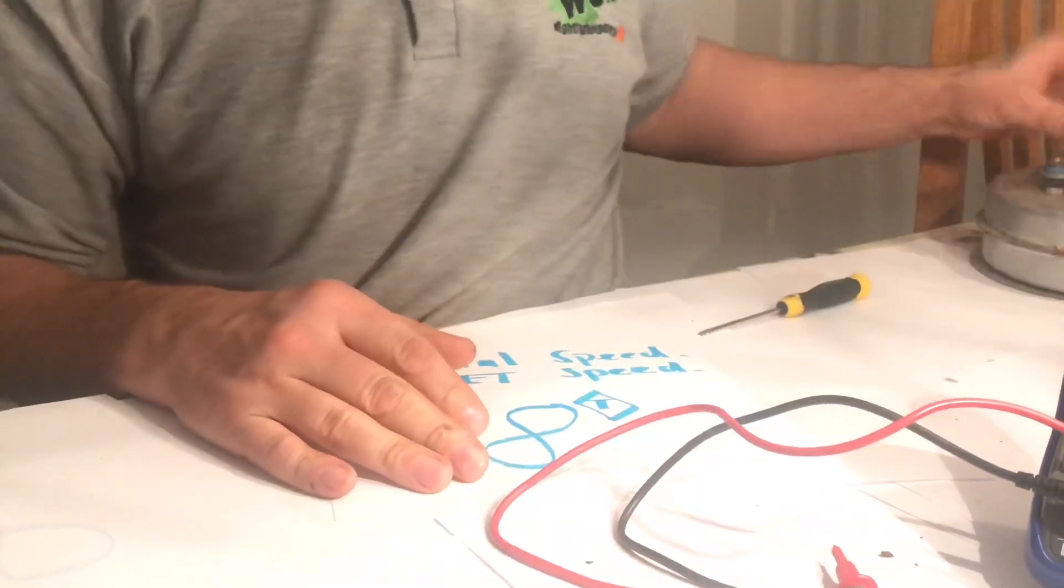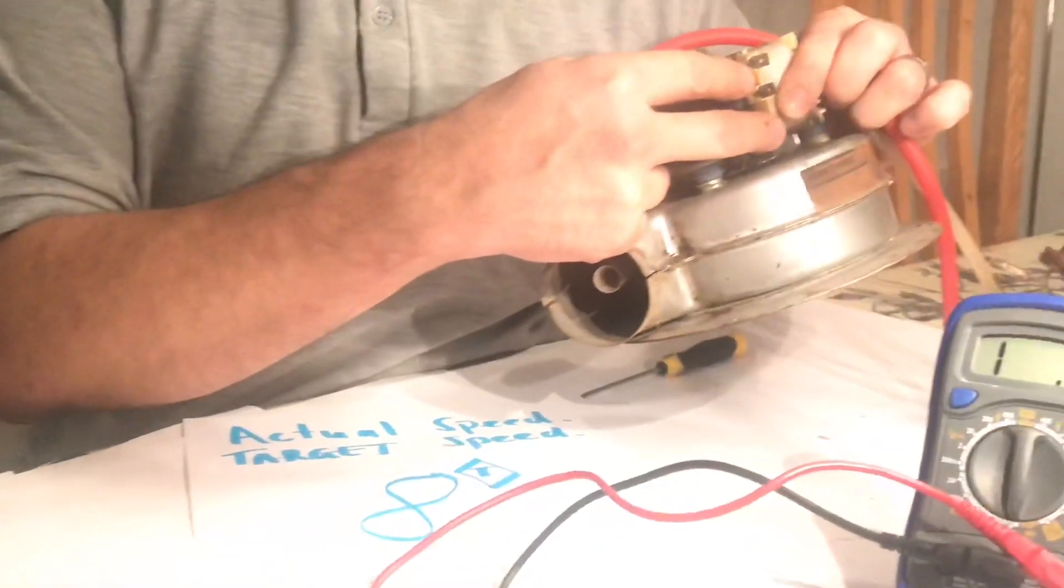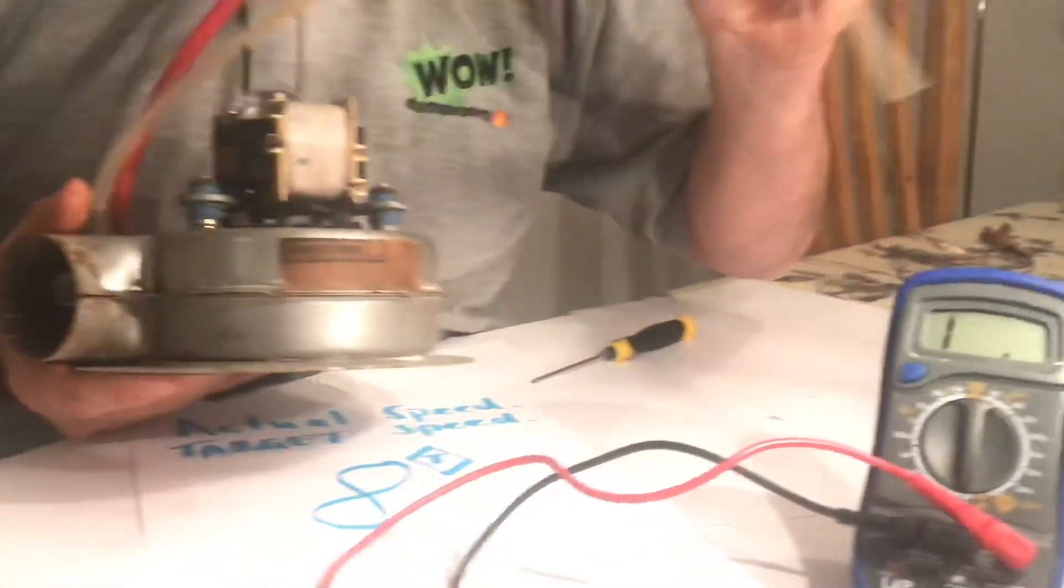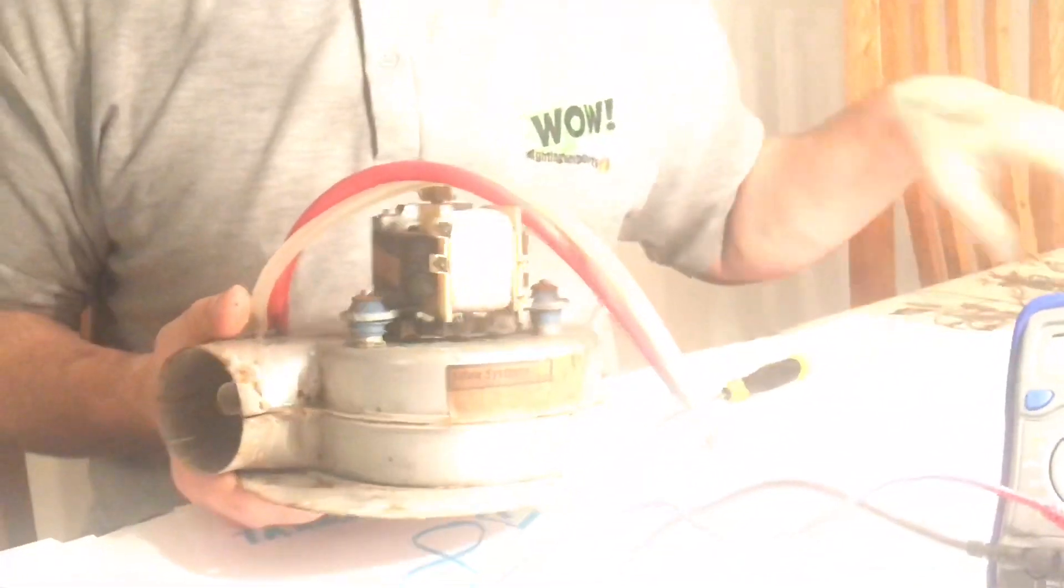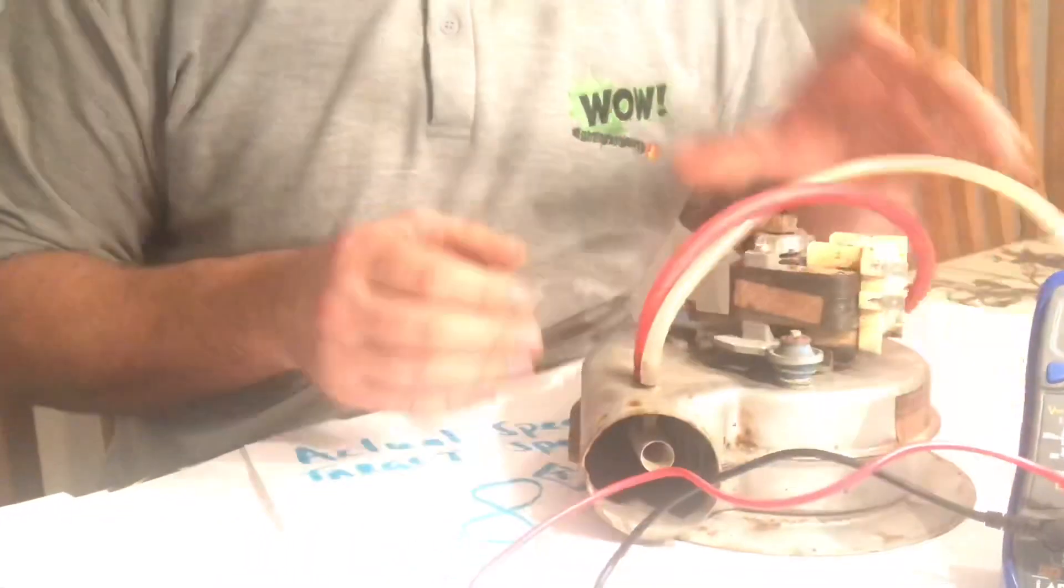So here we go, you've got fault codes, resistance readings, tubes, air pressure switch, and lubricate the bearings. Hope you enjoyed that, thank you.